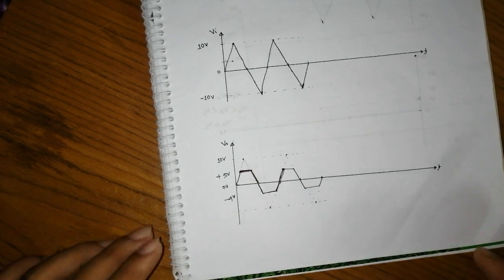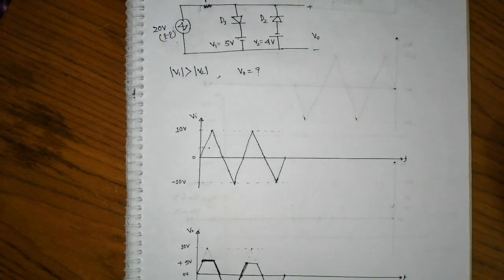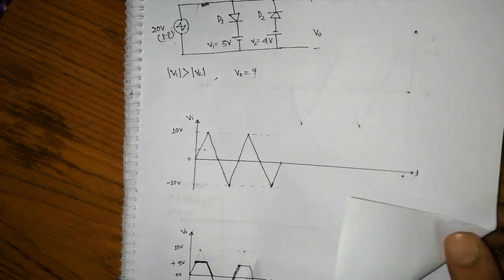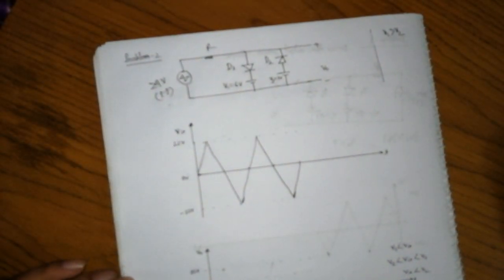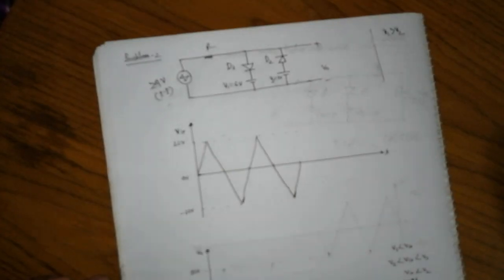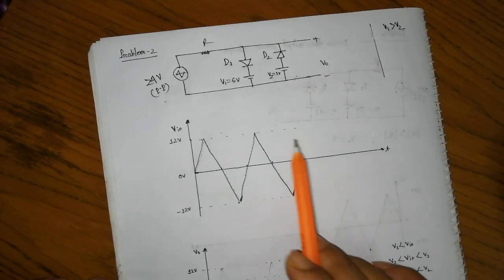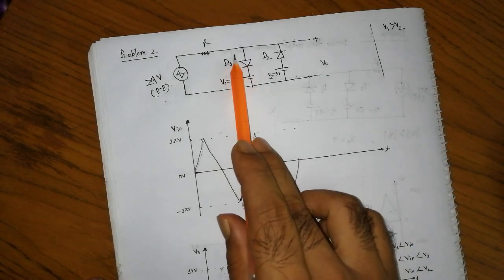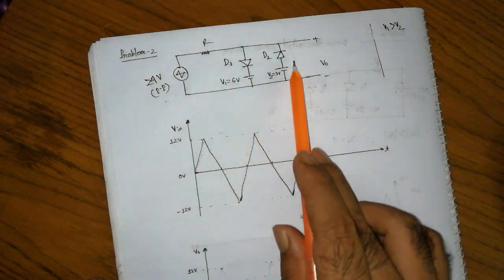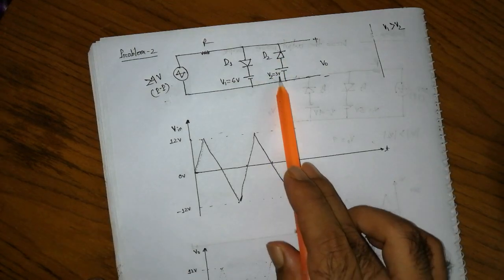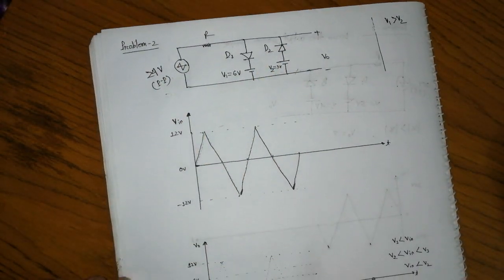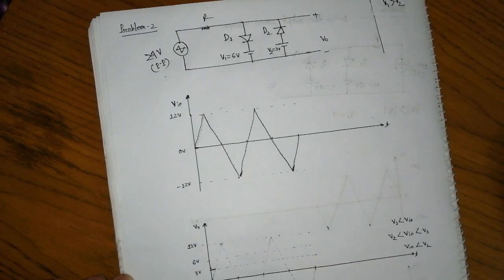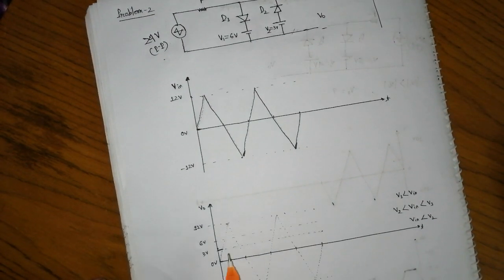This is very simple. Now Problem Number 2. For number two, we take the two-diode configuration from the beginning.